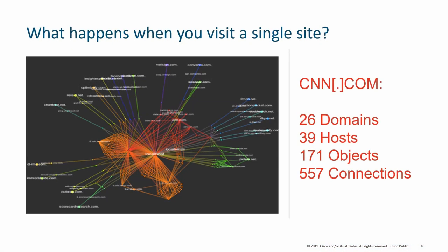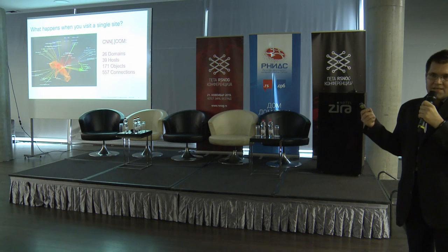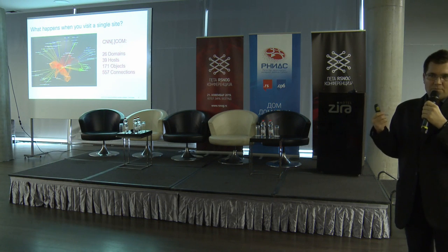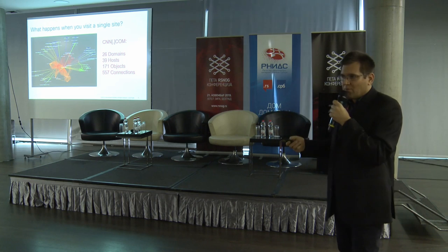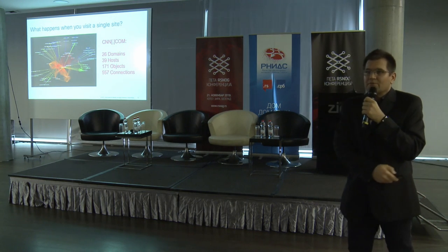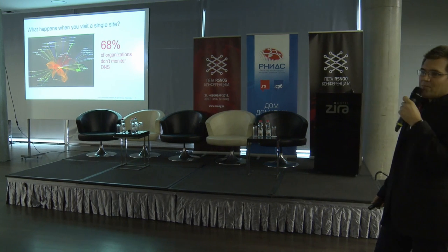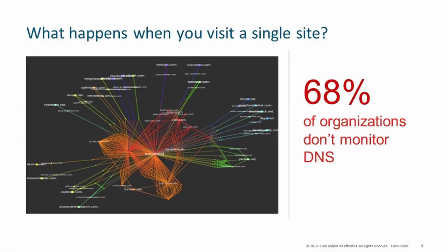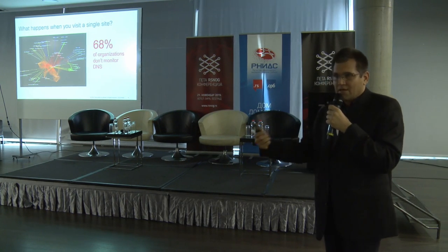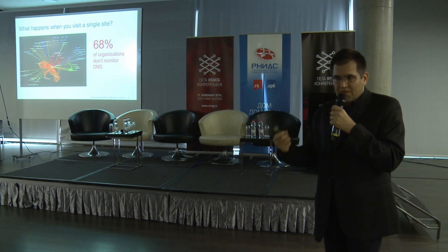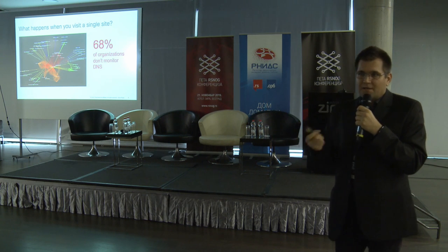The problem with DNS resolution is that if you visit just one single site like cnn.com, it will open a lot of different portals. Just opening one single portal, you have like 26 different domains resolving many other websites as well. Typical organizations don't monitor these DNS requests - this is a very huge problem, because it looks like a gold mine from a security point of view.